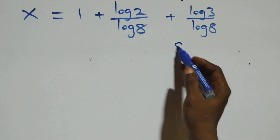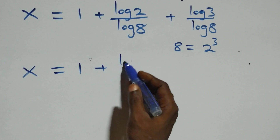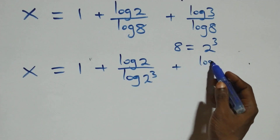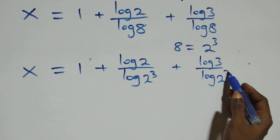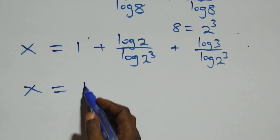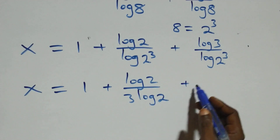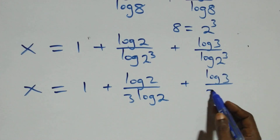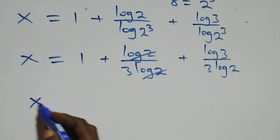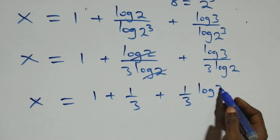We can rewrite log 8 as log of 2 cubed, which is 2 times 2 times 2. So we have x equals 1 plus log 2 over log(2 raised to power 3) plus log 3 over log(2 raised to power 3). Applying the power rule of logarithms, the 3 comes down, giving x equals 1 plus log 2 over 3 log 2 plus log 3 over 3 log 2.